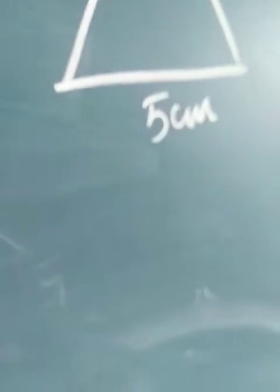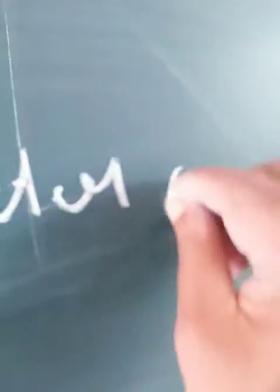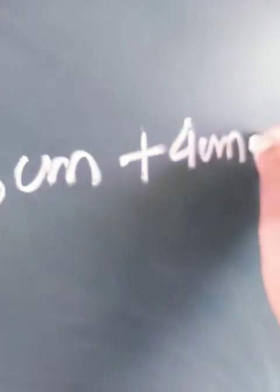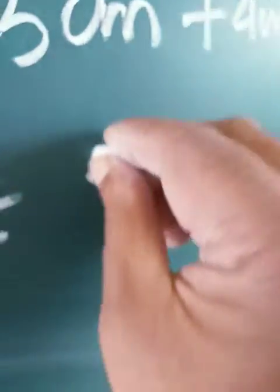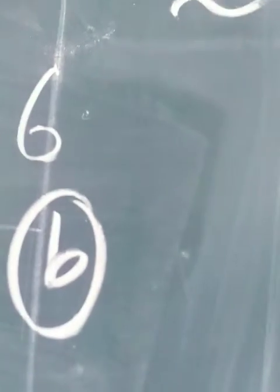Perimeter means the sum of all sides. So the perimeter of the triangle is equals to 3 centimeter plus 4 centimeter plus 5 centimeter. Adding them up: 3 plus 4 is 7, and 7 plus 5 is 12 centimeters. So this is the solution of sum number a of question number 6.